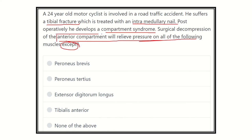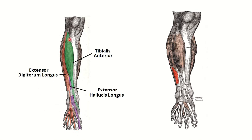Once we find out the muscles of the anterior compartment, it will be very easy to identify which muscle is not a component of the anterior compartment. The options are: peroneus brevis, peroneus tertius, extensor digitorum longus, tibialis anterior, and none of the above.